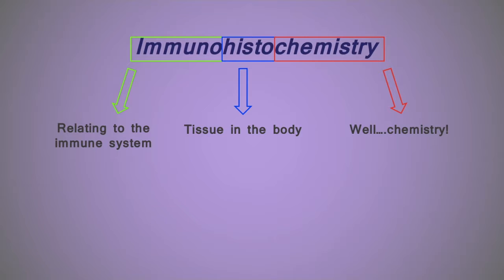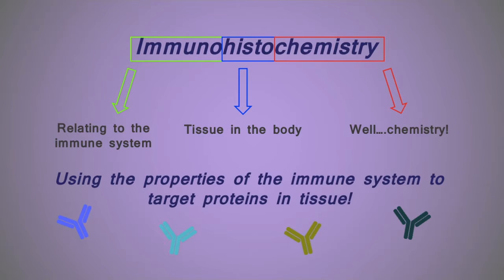Now we can understand that the method is really just about using the properties of the immune system to study the distribution of chemicals—in this case, proteins—in a particular organ or tissue.